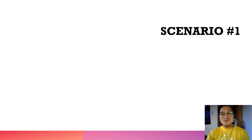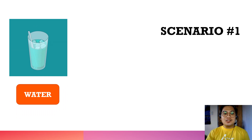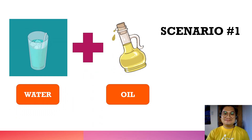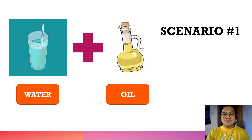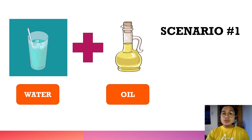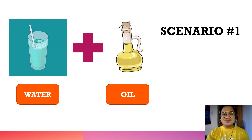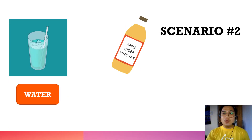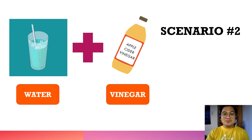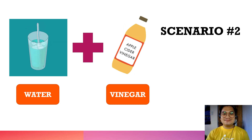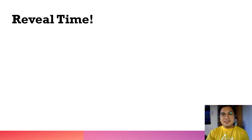Scenario number one: what do you think will happen if a water molecule is combined with an oil molecule? Scenario number two: you have a water molecule combined with vinegar. What do you think will happen with the combination of these two substances? Take note of your answer and post it in the comment bar of the FLMS. Now let's move to the reveal of our activity, where we discussed miscibility and immiscibility.